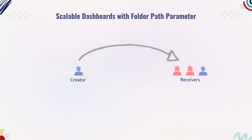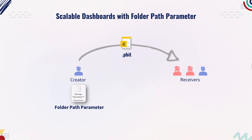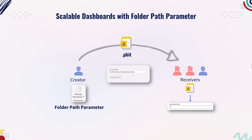So here is the better solution. When you export your file as a .pbit, you can add a folder path parameter, and your queries reference this parameter instead of hard-coded paths. So when someone opens the template, Power BI will prompt them to enter a folder path and automatically connect to all files inside that folder. One input, one step, and all files connected. Now let's jump to the demo where we will see this step by step.